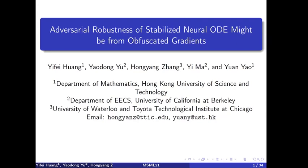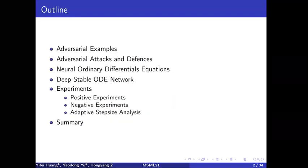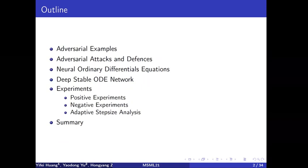Our topic is the thorough robustness of stabilized neural ODE networks from obfuscated gradients. The outline is as follows: we will introduce adversarial examples, attacks, and defenses, beginning with neural differential equations. We will then propose a deep stable ODE network, followed by experiments including positive and negative results, as well as analysis of those experiments.